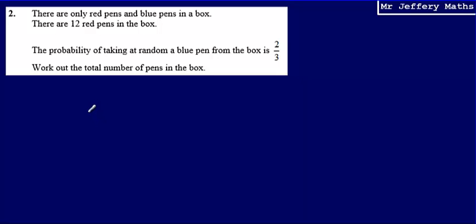This is question 2 from a series of videos on Edexcel practice papers. Here we're told there are only red pens and blue pens in a box. There are 12 red pens in the box. The probability of taking at random a blue pen from the box is 2/3. We're asked to work out the total number of pens in the box.